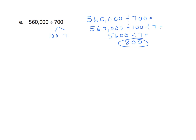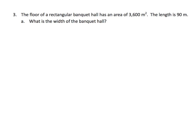Let's look at some word problems now. It says a rectangular banquet floor, or hall, has an area of 3,600 meters squared. The length is 900 meters. Let's draw a picture. We're going to find the width given the length. So we know that that's 900, and in the middle we're going to put 3,600. We have to find the width here.